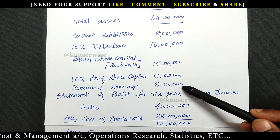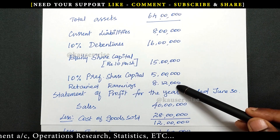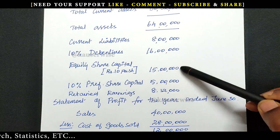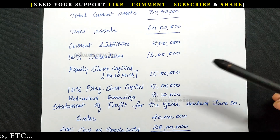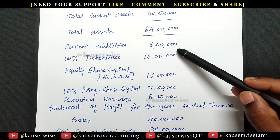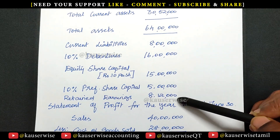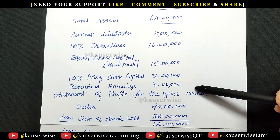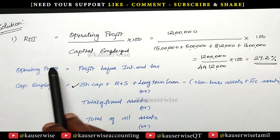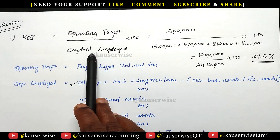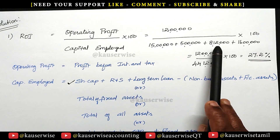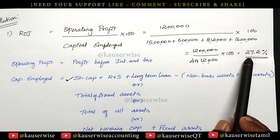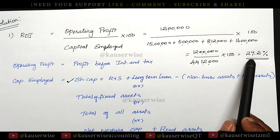Retained earnings — that is reserves and surplus — also belongs to shareholders. Just add 8,12,000 and then debentures as long-term borrowings. In this problem, there is no fictitious assets and non-business asset, so you can find capital employed simply by adding all four components. Operating profit 12 lakhs divided by capital employed — equity share capital plus preference share capital plus retained earnings plus debentures equals 44,12,000 — into 100 gives 27.2%. This is return on investment.